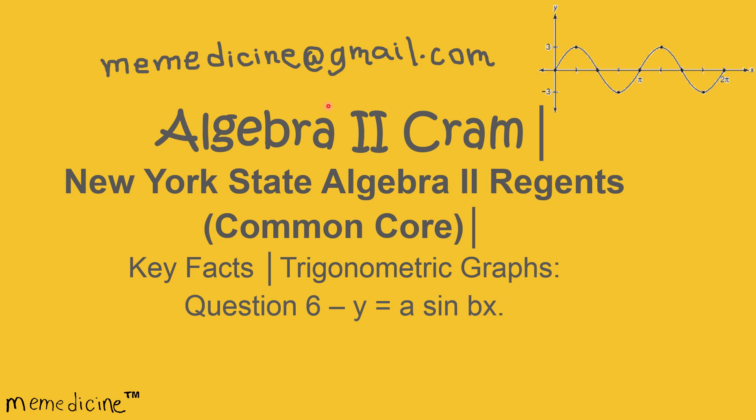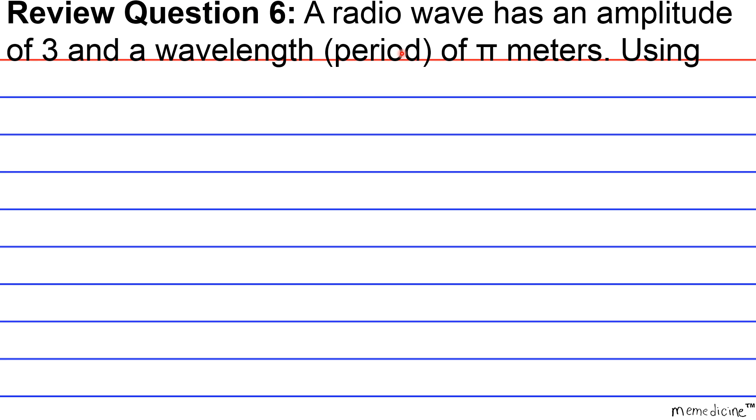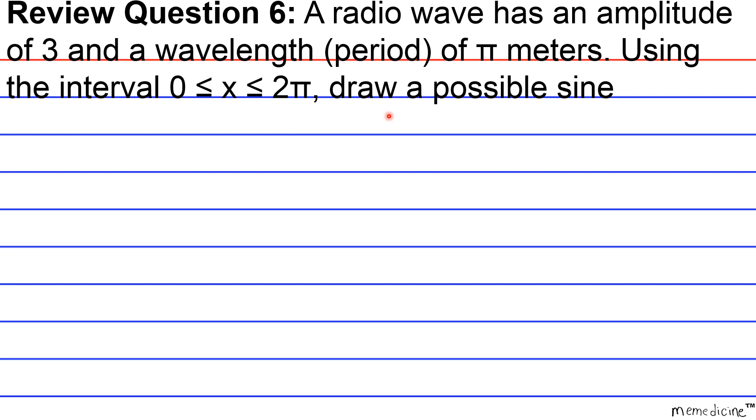Alright, let's delve into this problem together. Review question 6: A radio wave has an amplitude of 3 and a wavelength, that is the period, of π meters. Using the interval 0 ≤ x ≤ 2π, draw a possible sine curve for this wave that passes through the origin. And be sure to write an equation for your curve.